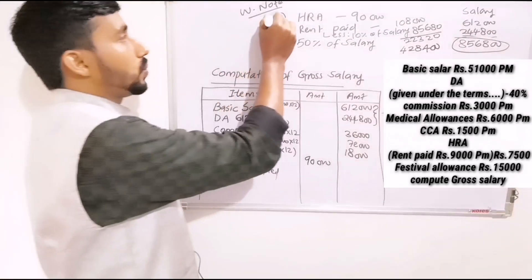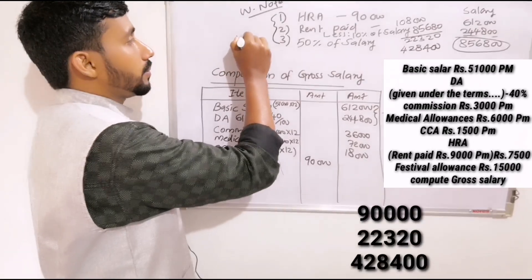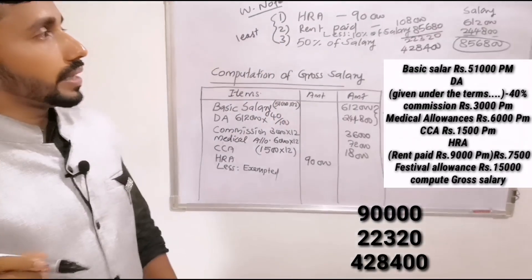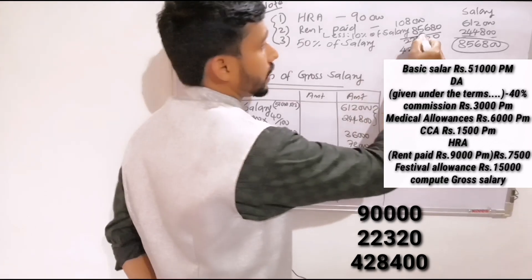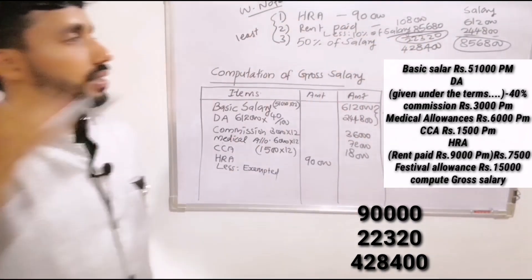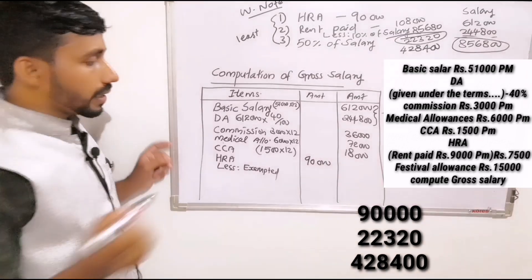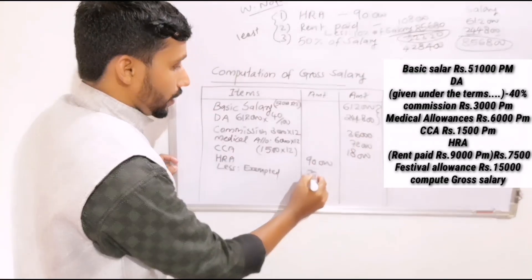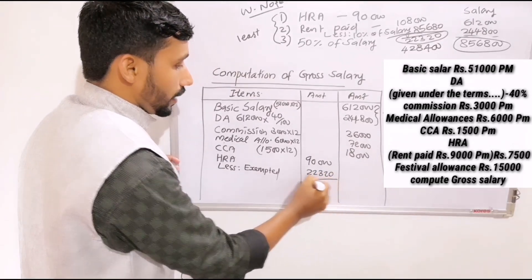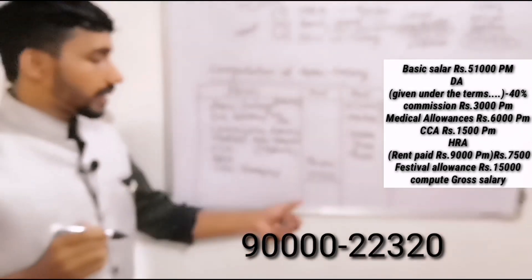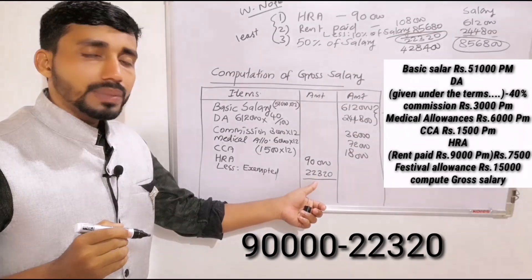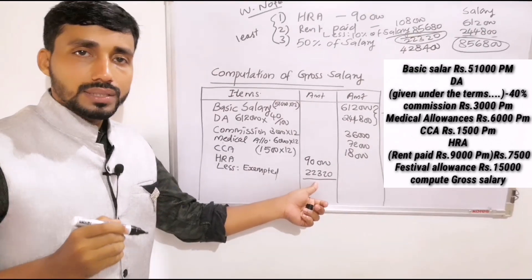From these three criteria, the least amount is taken as the exemption, which is $22,320. The taxable HRA is then calculated as HRA received minus the exemption.